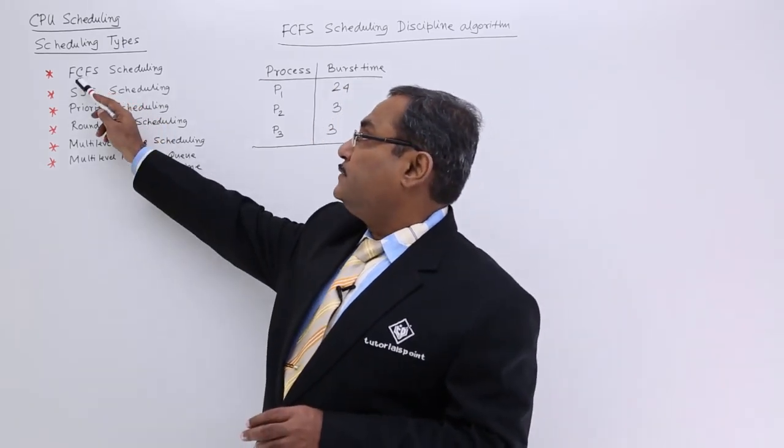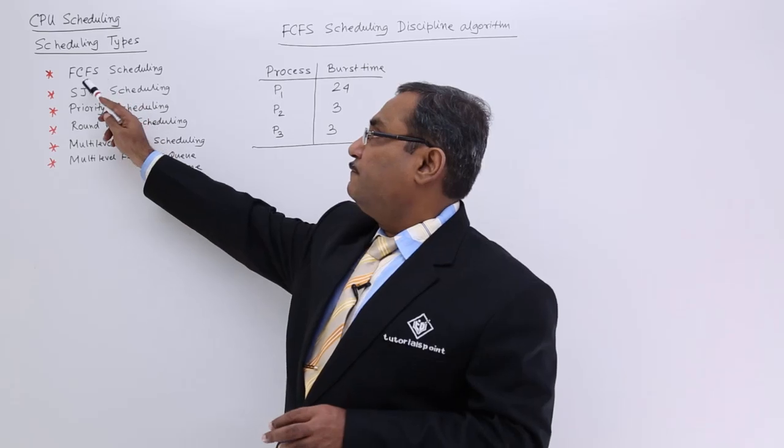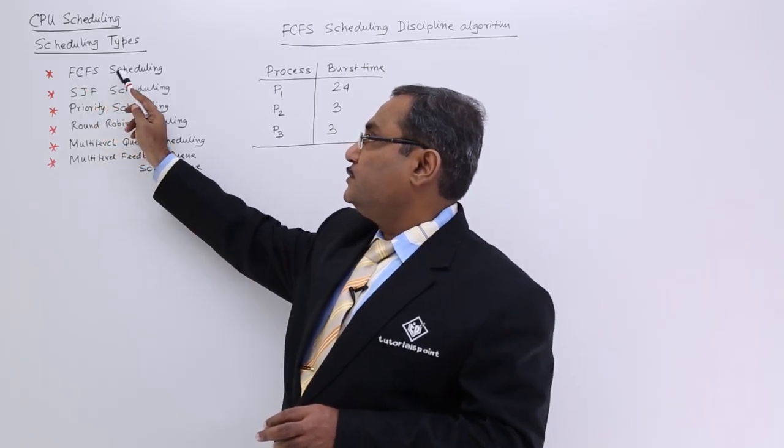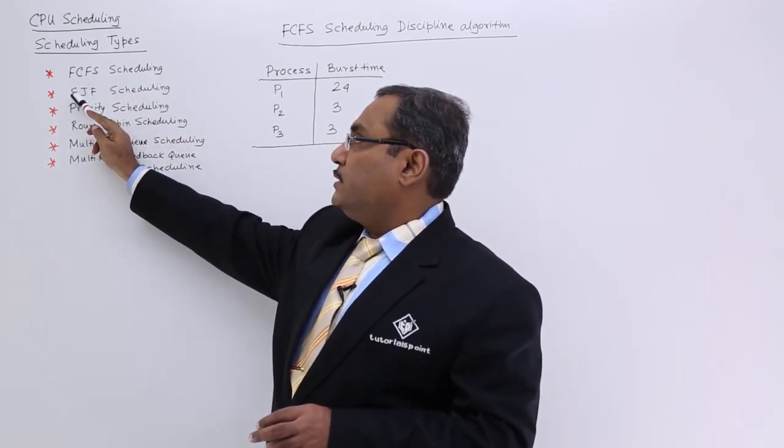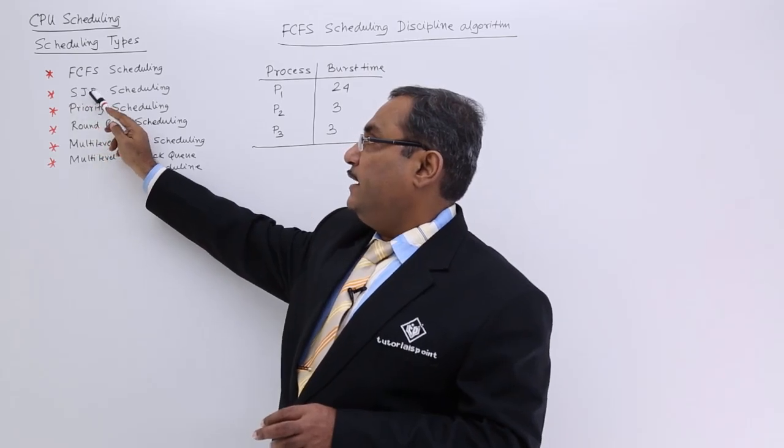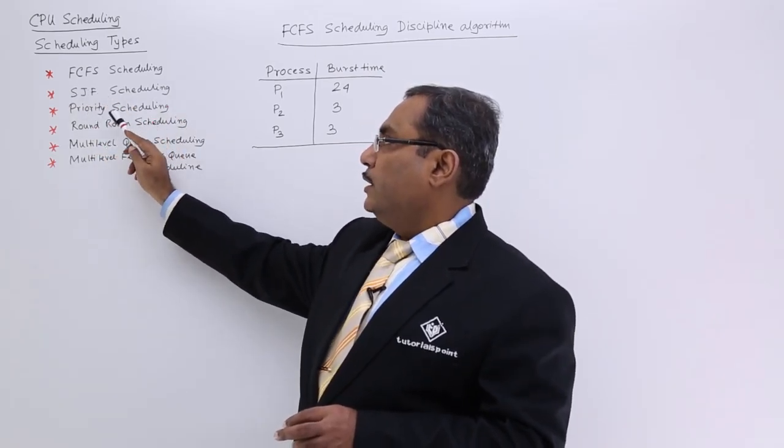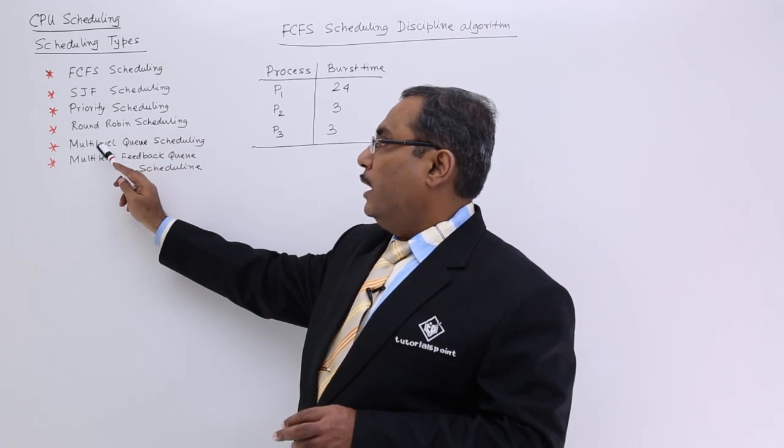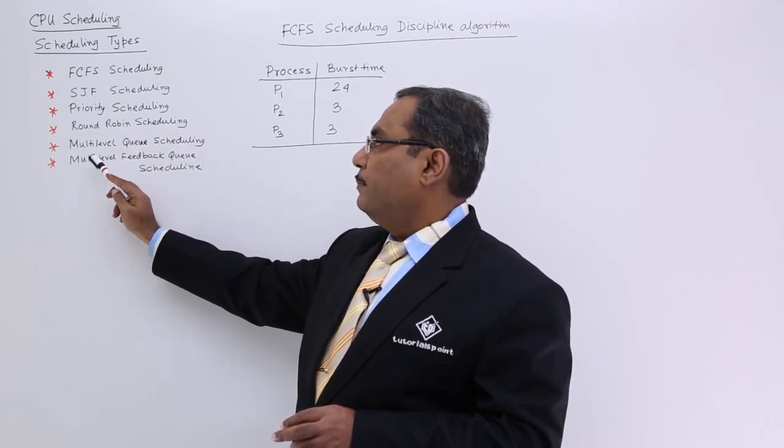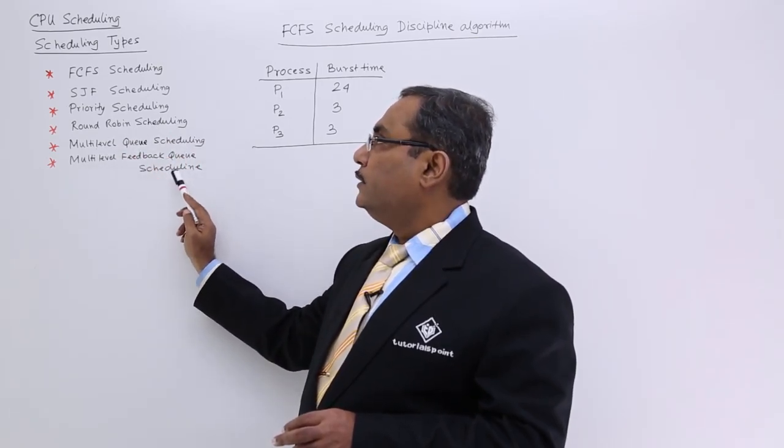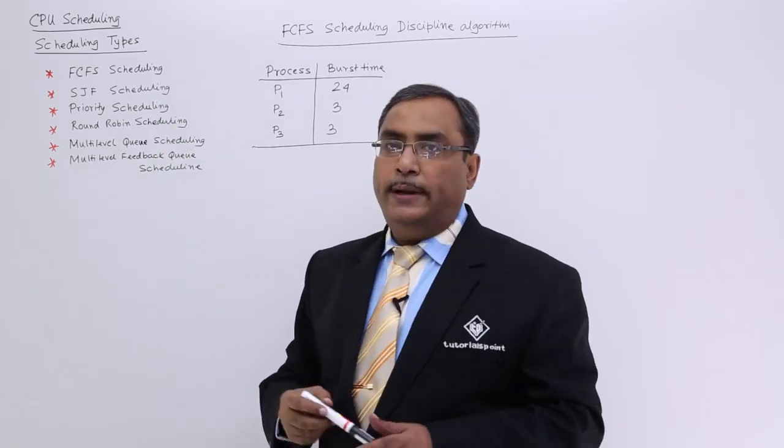There are different types: FCFS scheduling (first come first serve scheduling), shortest job first (SJF scheduling), priority scheduling, round robin scheduling, multilevel queue scheduling, and multilevel feedback queue scheduling. These are the different scheduling disciplines.